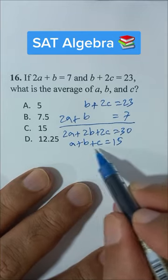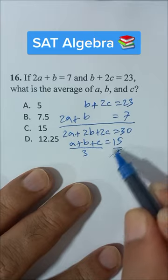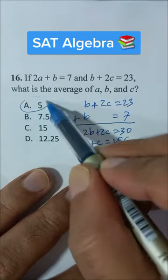And to get the average of these three items, we have to divide it by 3. So 3 times 5 is 15—that's our answer, choice A.